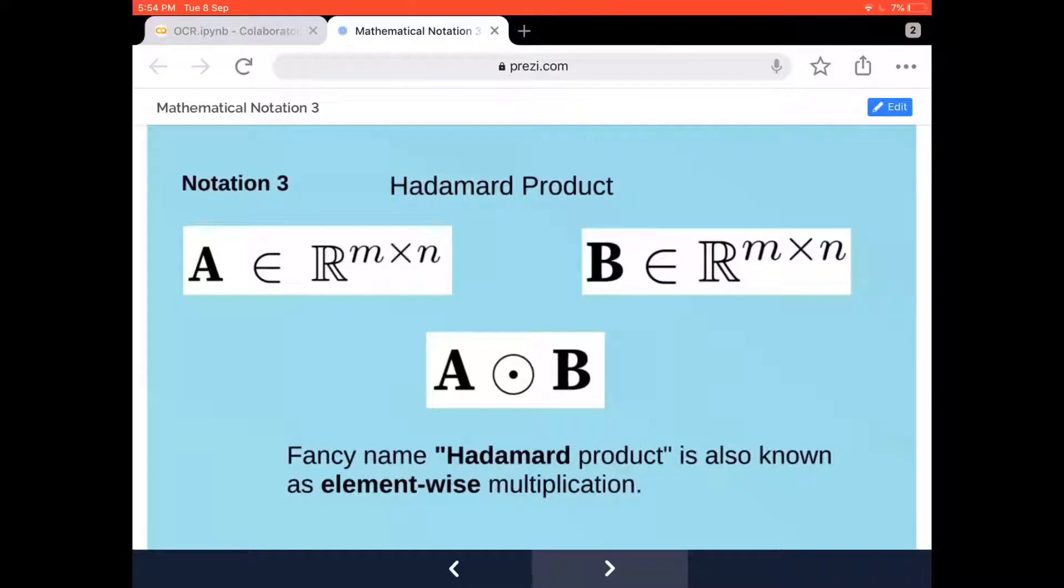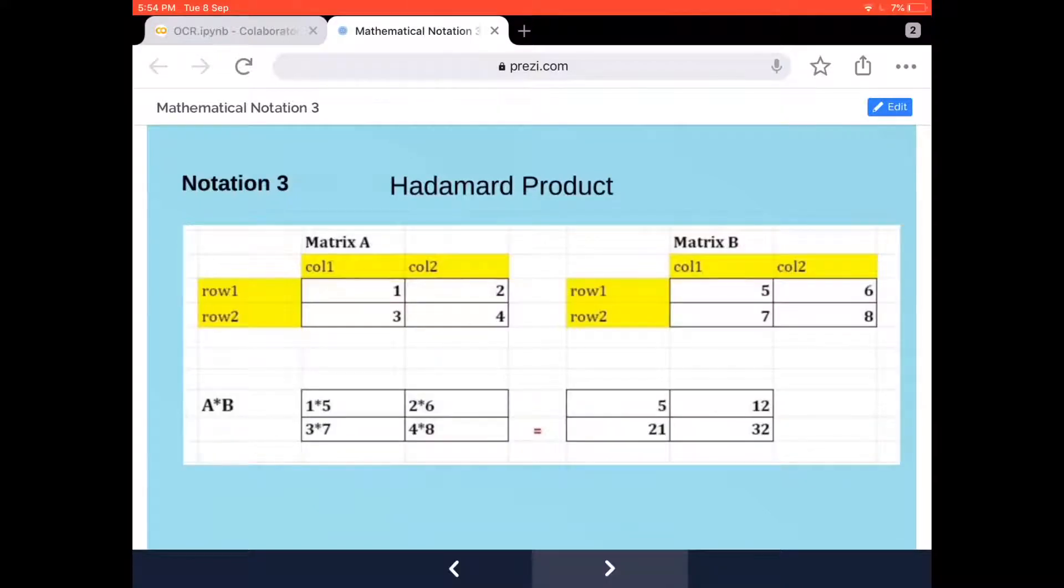Now, based on the two notations we've already seen, we're going to talk about our third notation, which is A element-wise multiplication with B. This is commonly called the Hadamard product, also known as element-wise multiplication, and it's actually very simple.